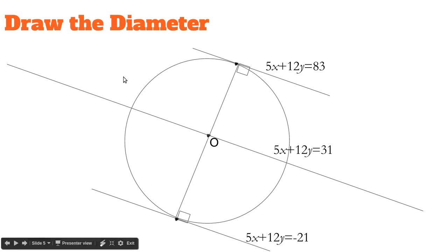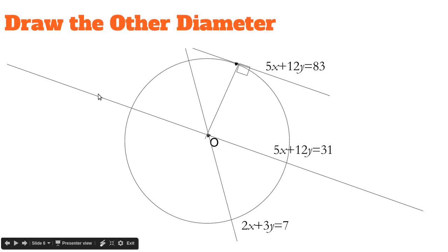Hopefully you see how this line is halfway in between those two lines and that goes through the center. Now I'm going to introduce the other line 2x plus 3y equals 7. I've gotten rid of the 5x plus 12y equals negative 21 because we won't really need it anymore.